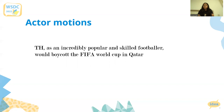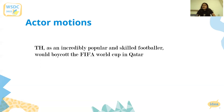For example, if the motion is 'This House As An Incredibly Popular And Skilled Footballer Would Boycott The FIFA World Cup In Qatar,' you have to highlight a conflict of incentives this individual might face. Sure, they would care about their career and potentially earning money through sponsorships, but are they also likely to care about the messaging they're sending to their fans now that they're this incredibly successful sports personality? How is this individual likely to want to use the platform they've earned through years of hard work?